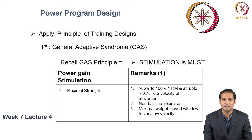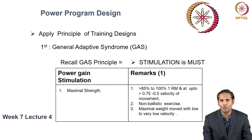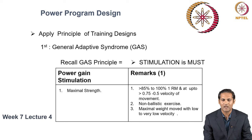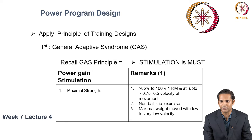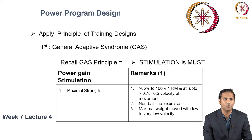Maximal strength incorporates lifting maximal weight moved at a very low velocity. The weight ranges from 85% to 100% of 1RM, and the velocity of movement is between 0.5 to 0.75 meters per second. All non-ballistic exercises relate to maximal strength stimulation.